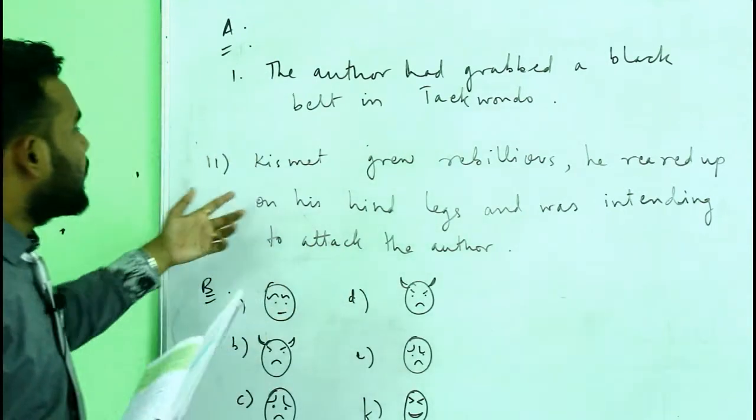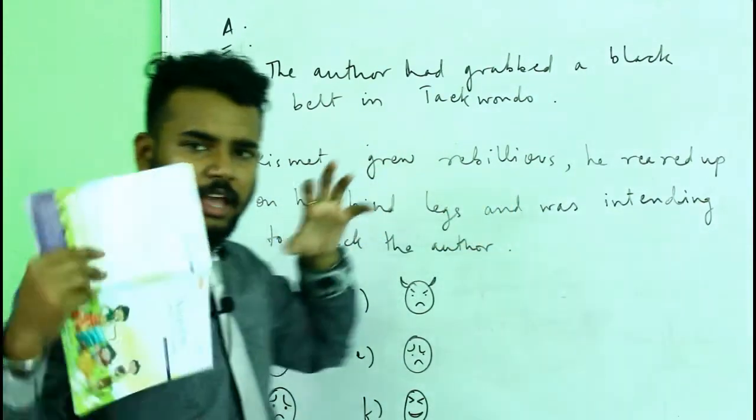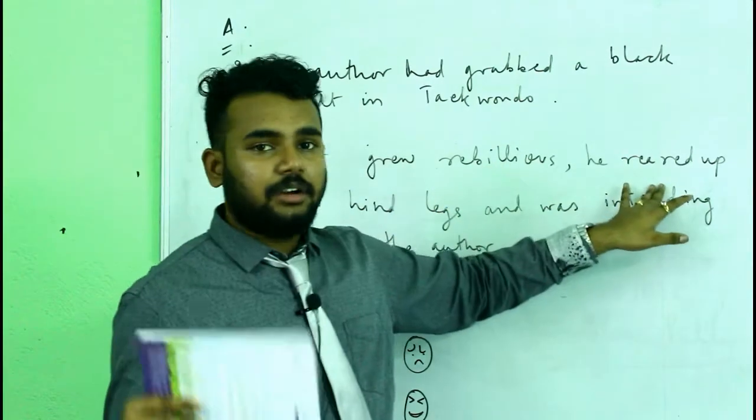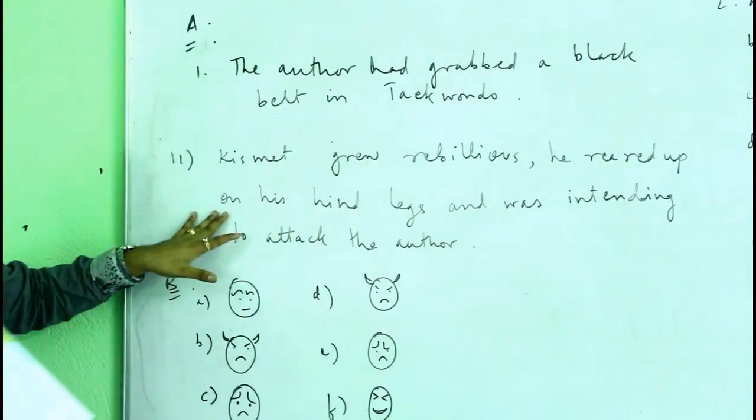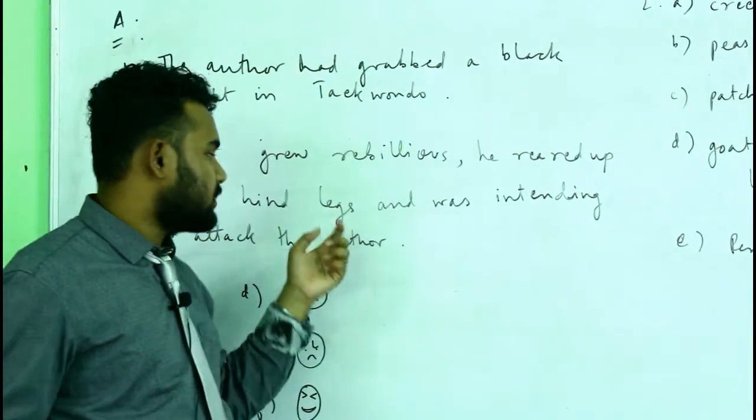Number two: how did Kismet come to life with the author? How they had a clash? Kismet grew rebellious. Rebellious means very angry. She reared up, reared up means stand up, on his hind legs, hind legs mean back legs.